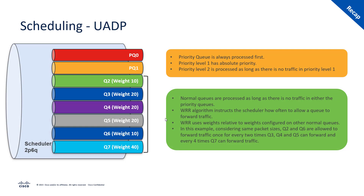A quick recap on how scheduling works. We have two types of queues: priority queues and non-priority queues. Within the priority queue there are two levels — priority level one and priority level two. As long as there is traffic in the priority queue, it will be processed at the expense of the rest of the queues. Priority level one has absolute priority, so all other queues are starved until priority queue one is empty. Priority queue two sends traffic only when there is no traffic in priority queue one, and normal queues send only when neither priority queue has traffic.